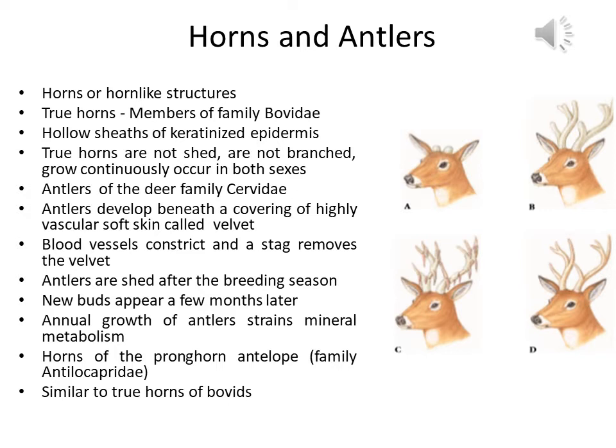Antlers of the deer family Cervidae are branched and composed of solid bone when mature. During their annual spring growth, antlers develop beneath a covering of highly vascular, soft skin called the velvet. Except for caribou, only males of the species produce antlers. When growth of the antlers is complete, just before the fall breeding season, blood vessels constrict and a stag removes the velvet by rubbing its antlers against trees. Antlers are shed after the breeding season.